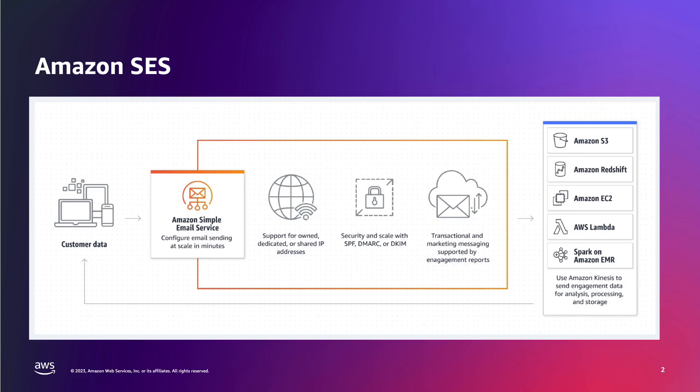Amazon SES is a cloud email service provider that can integrate into any application for bulk email sending. Senders from small startups to large enterprise accounts can use SES to reach their customers, but getting those messages to the recipient inbox can be tricky. Understanding deliverability best practices and what mailbox providers expect from bulk senders is the key to getting messages to a customer's inbox.